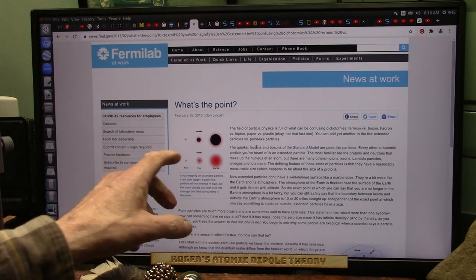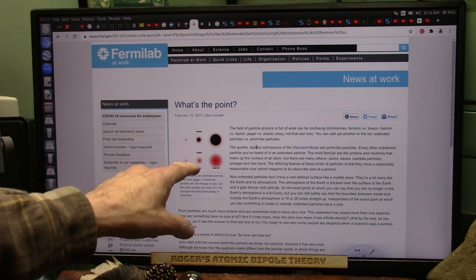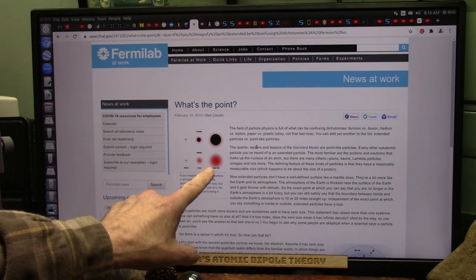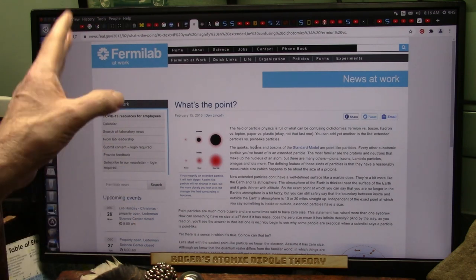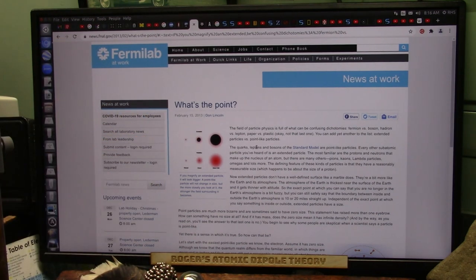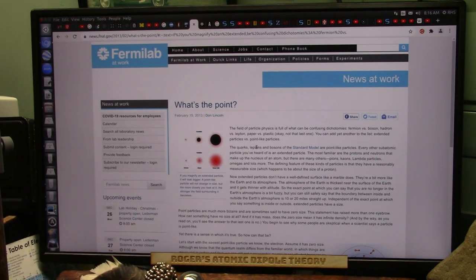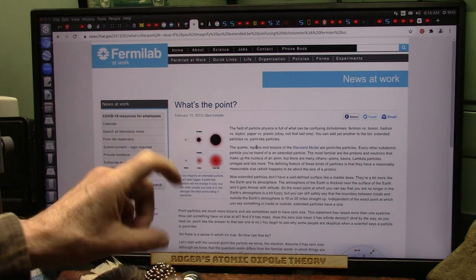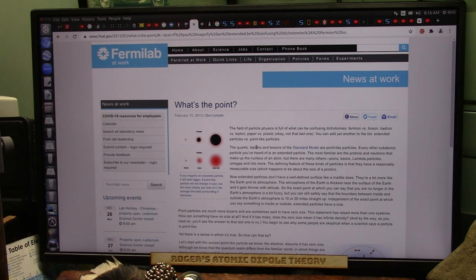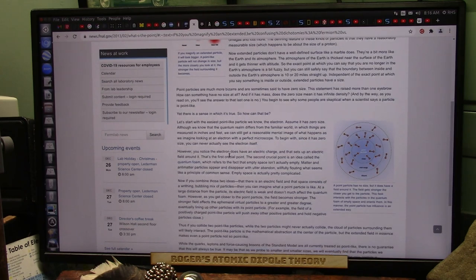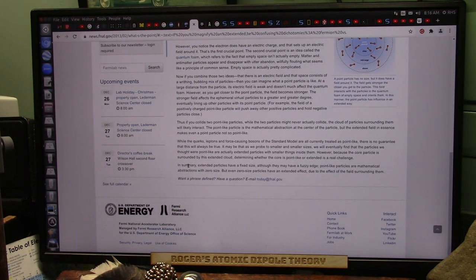These are the particles that Fermilab and Don Lincoln was talking about way back in 2013. This is what's called a Dirac neutrino, which is the black and the white attached together. We were able to split them. The extended particle, the black one, has a fixed size, it's just a mass, and it's heavy as hell.